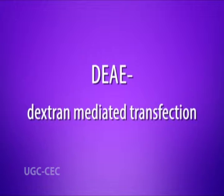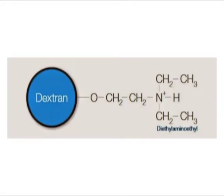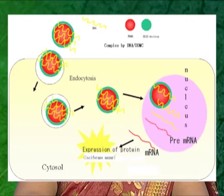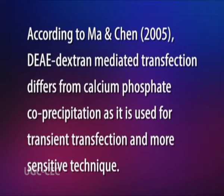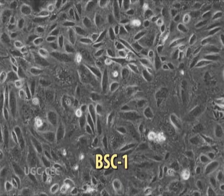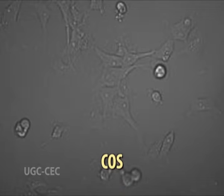Next is DEAE-dextran mediated transfection. Another method is the use of cationic polymers such as DEAE-dextran or polyethylenimine. The negatively charged DNA binds to the polycation and the complex is taken up by the cell via endocytosis. According to Ma and Chen in 2005, DEAE-dextran mediated transfection differs from calcium phosphate co-precipitation as it is used for transient transfection and is a more sensitive technique. It works more efficiently with cell lines such as BSC-1, CV-1, and COS.